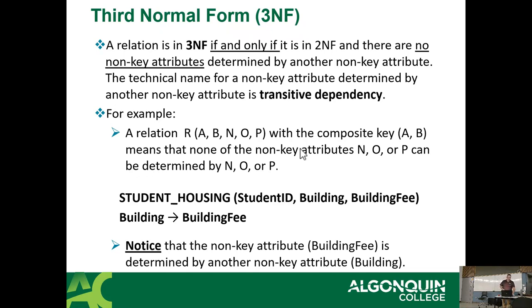Third normal form: a relation is in third normal form if and only if it is in second normal form, and there are no non-key attributes determined by another non-key attribute — this is known as a transitive dependency. For example, student housing has student ID, building, and building fee. The building fee is determined by the building, and the building is determined by the student ID. So the building fee is a transitive dependency because it depends on the building, which in turn depends on the student ID.